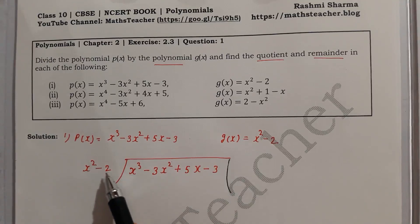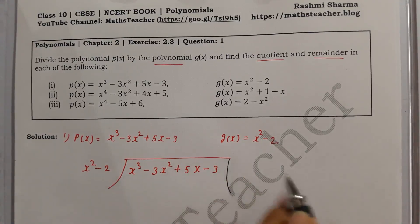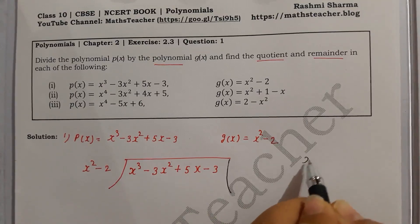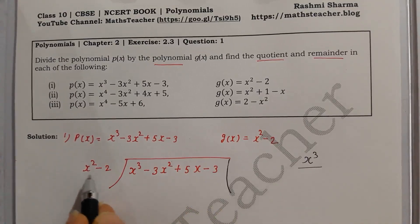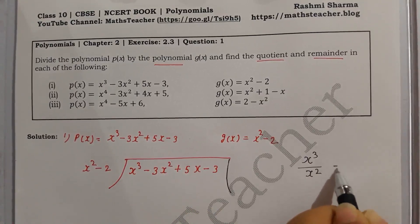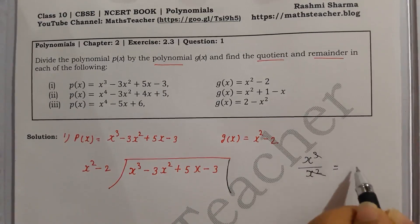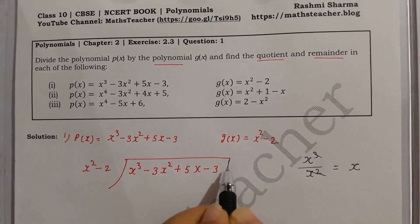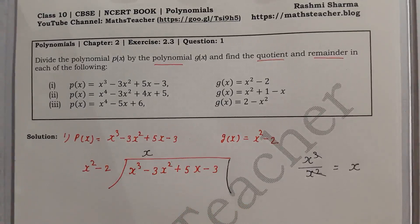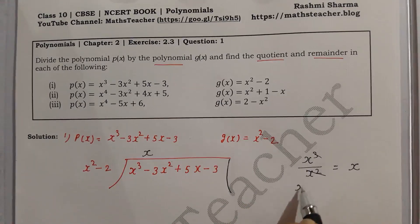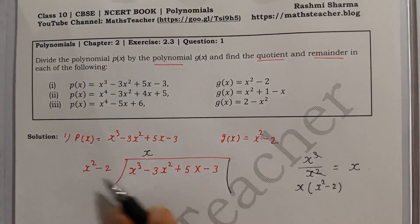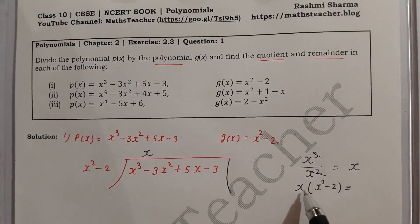The divisor has degree 2 and has no other variable, so it is constant after that. First, we take the first term of the dividend as the numerator and the first term of the divisor as the denominator. So x³ divided by x² cancels to give x. This x is our first quotient term.